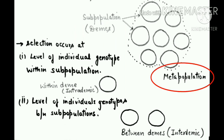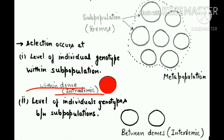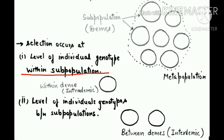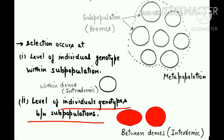Within a metapopulation, selection occurs at two levels. The first level considers a single patch, i.e., one deem or subpopulation. Here, selection acts on the genotype of individuals within the subpopulation — this is known as intrademic selection. The second level is interdemic, meaning selection occurs between deems or between populations within the metapopulation, where genotypes are selected with respect to two different deems.